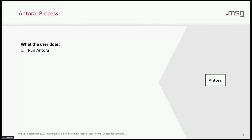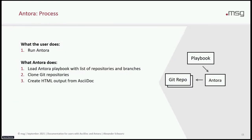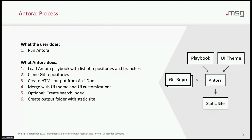Looking at the Antora process — the user just runs Antora and Antora does its job. When the user starts Antora, it loads the playbook with a list of all the repositories and branches where the content is. Then it clones the Git repositories and creates HTML output from all the AsciiDoc content. It merges that with the UI theme and the customizations. Optionally, you can also create a search index and other things. Finally, it creates an output folder with a static site. This static site can be hosted on any web server — you can also publish it on a content delivery network or send it as a zip file to your customer.